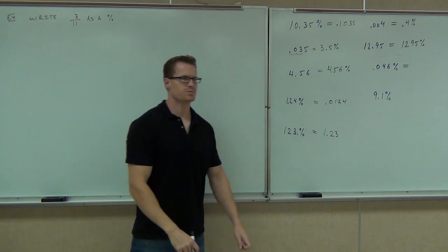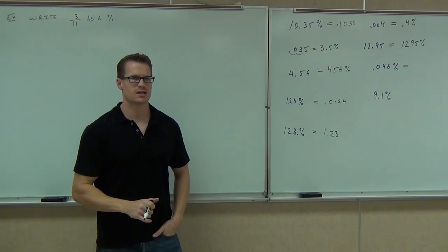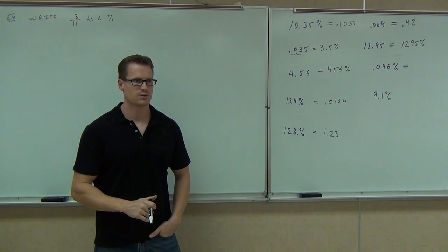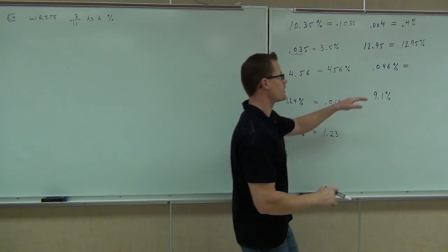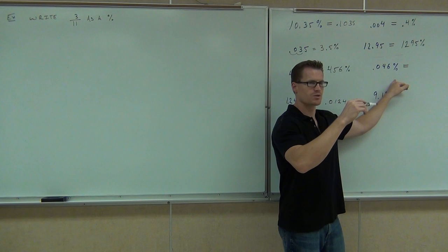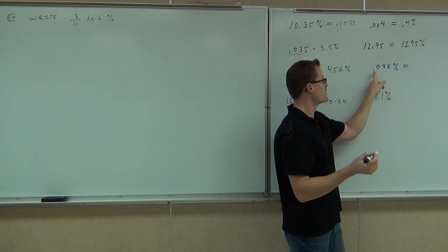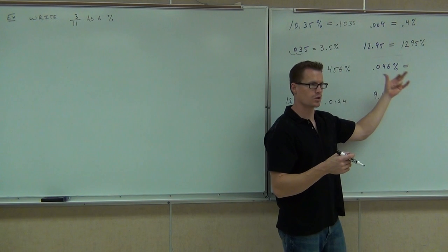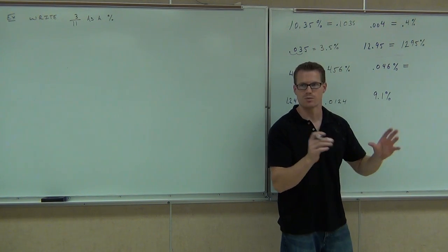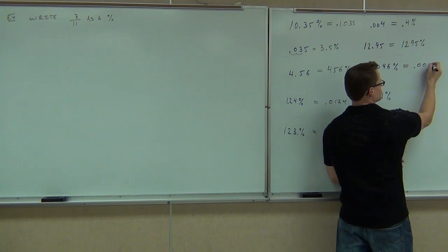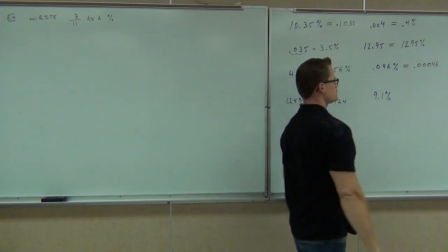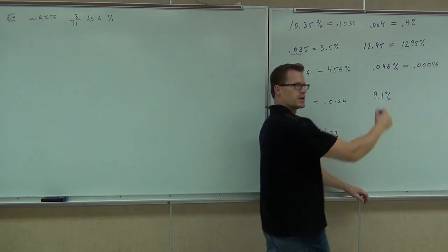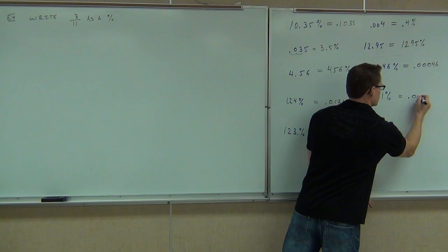0.046% — how do we change that into a decimal? To the left. There's nothing to the left, so you're dividing by 100, making that number smaller. If I moved it to the right I'd have 4.6, which would look bigger than my percent — not smaller. The decimal needs to look smaller than the percent every time. Moving to the left: it's got to be 0.00046. Last one: 9.1% — two spots to the left gives you 0.091.